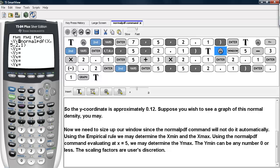And using the normalpdf command evaluating at x equals 5, we may determine the y-max value as well. The y-min can be any number, zero or less. And the scaling factors are usually at the user's discretion.